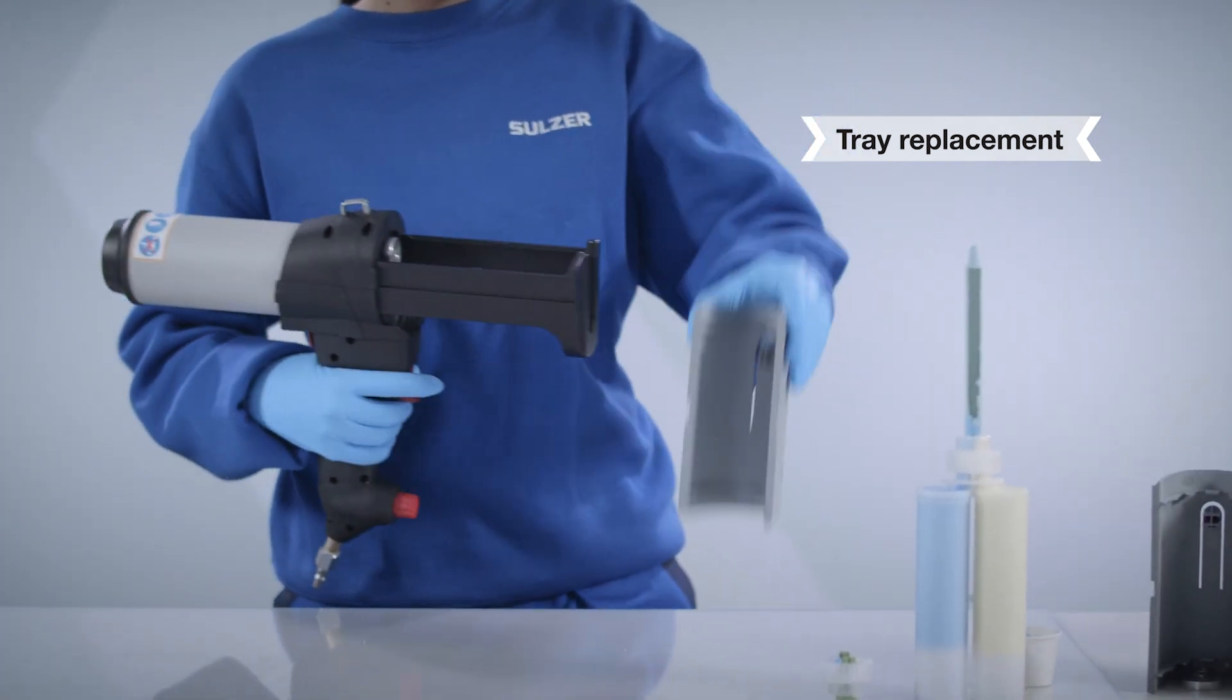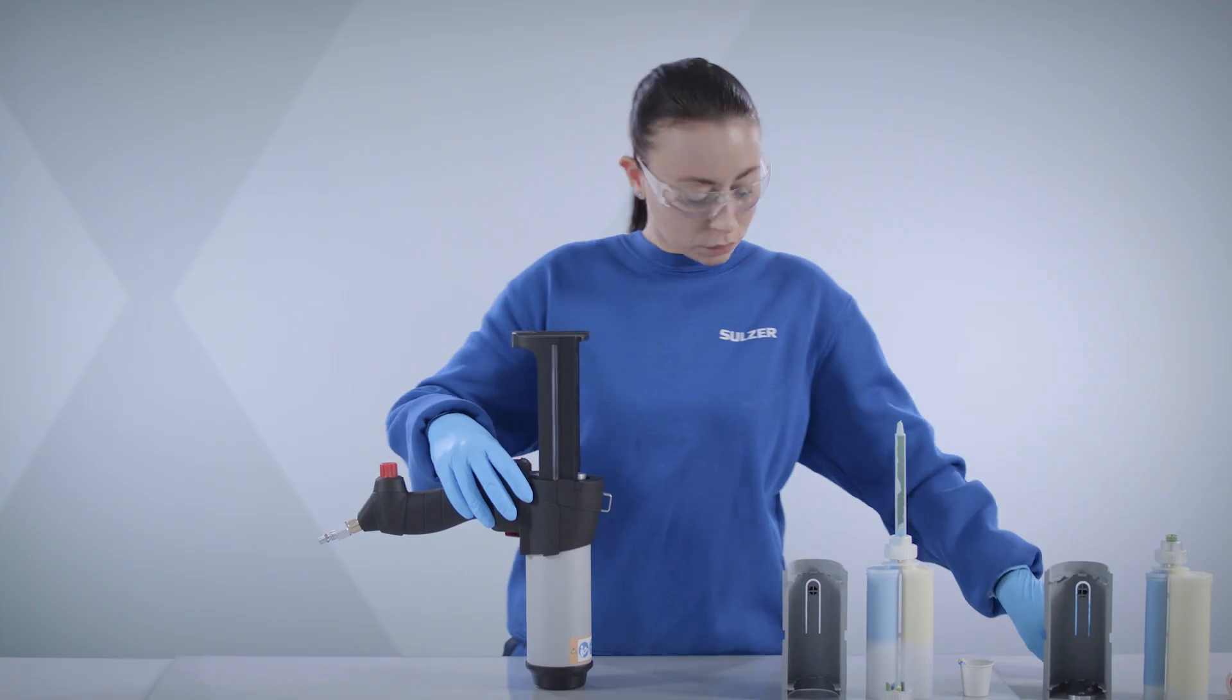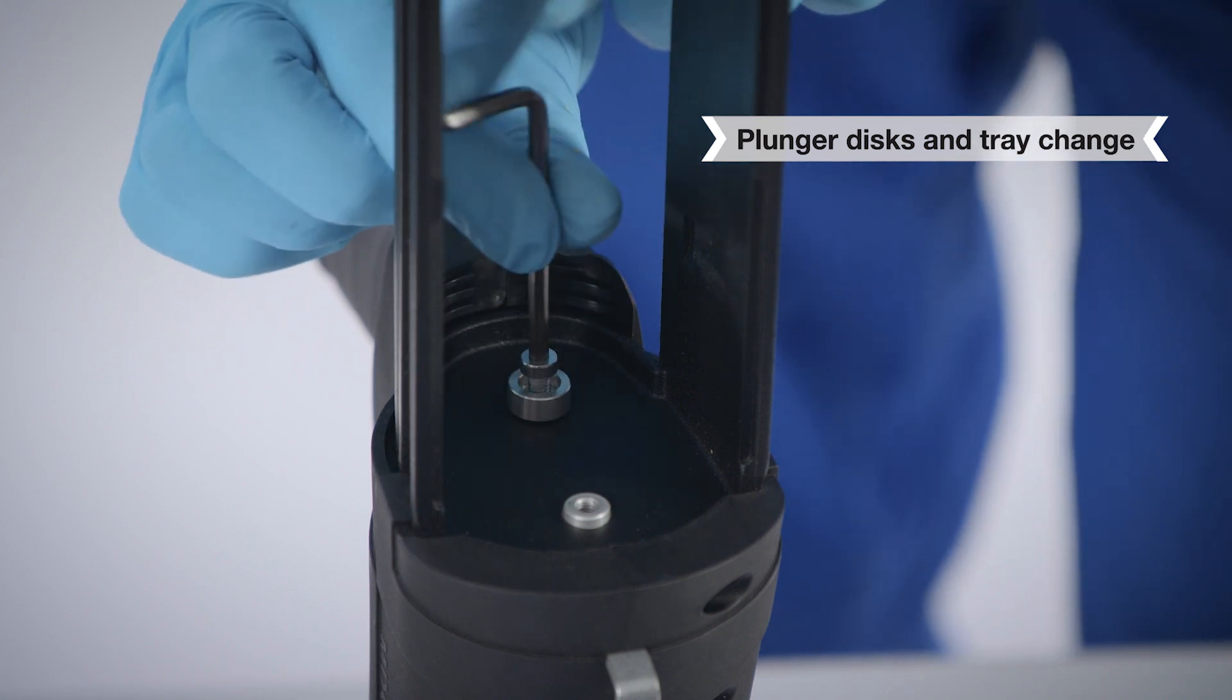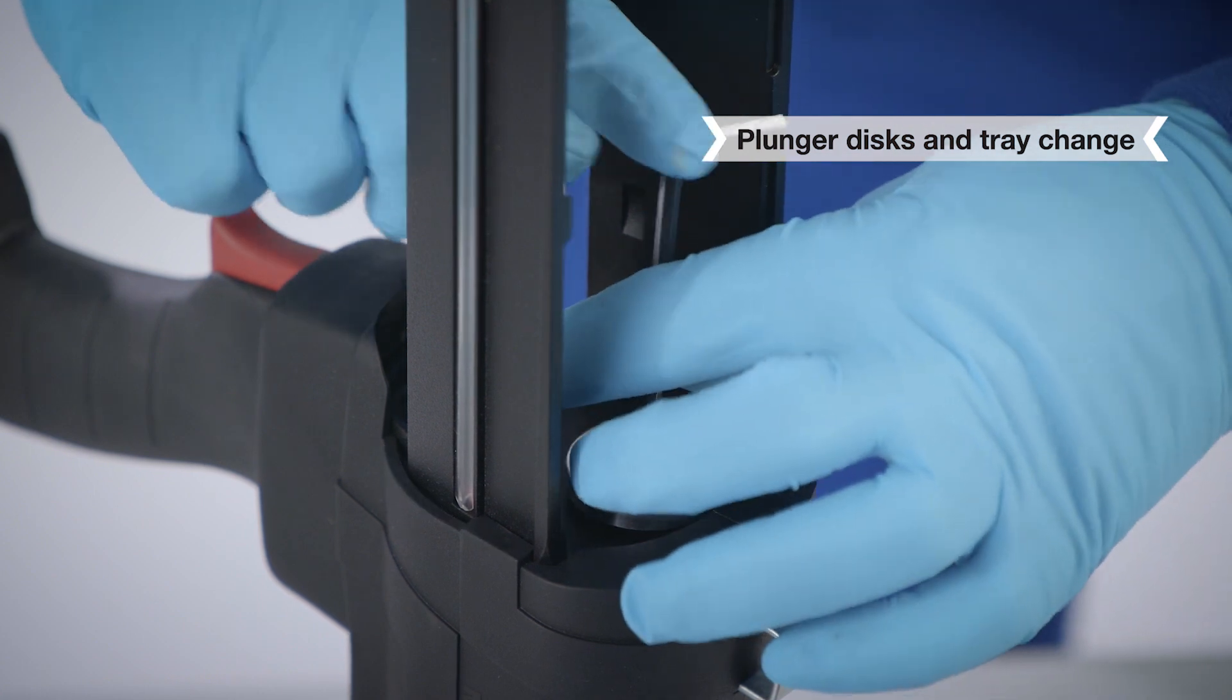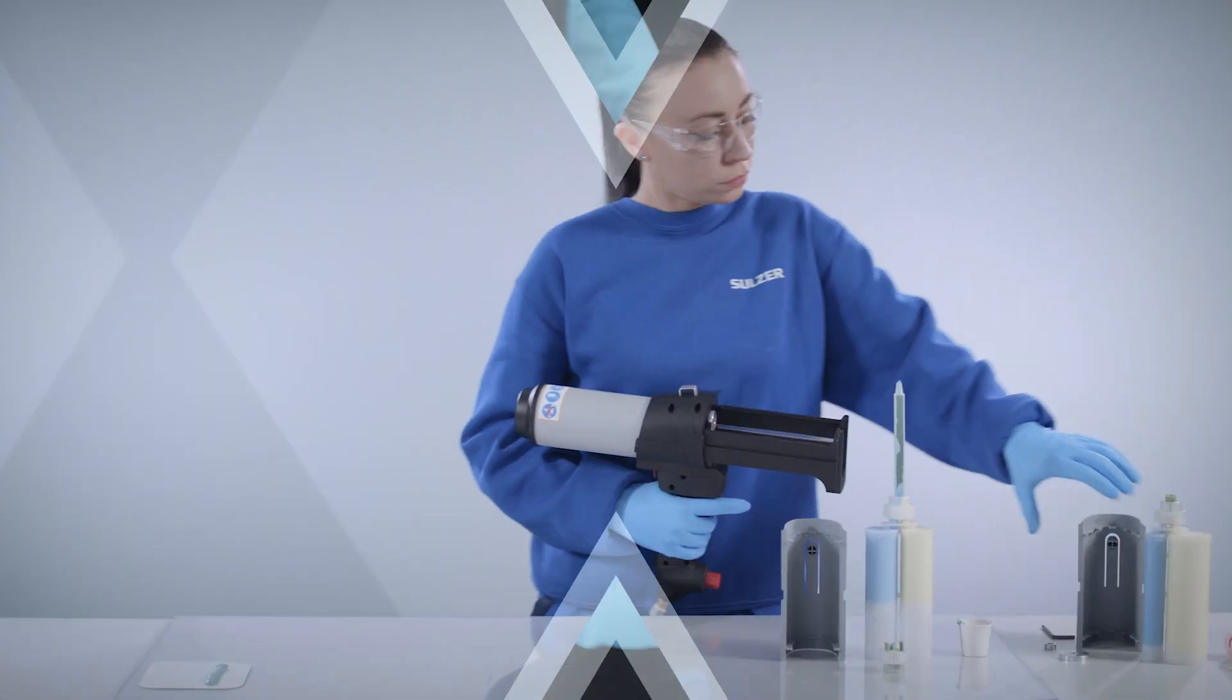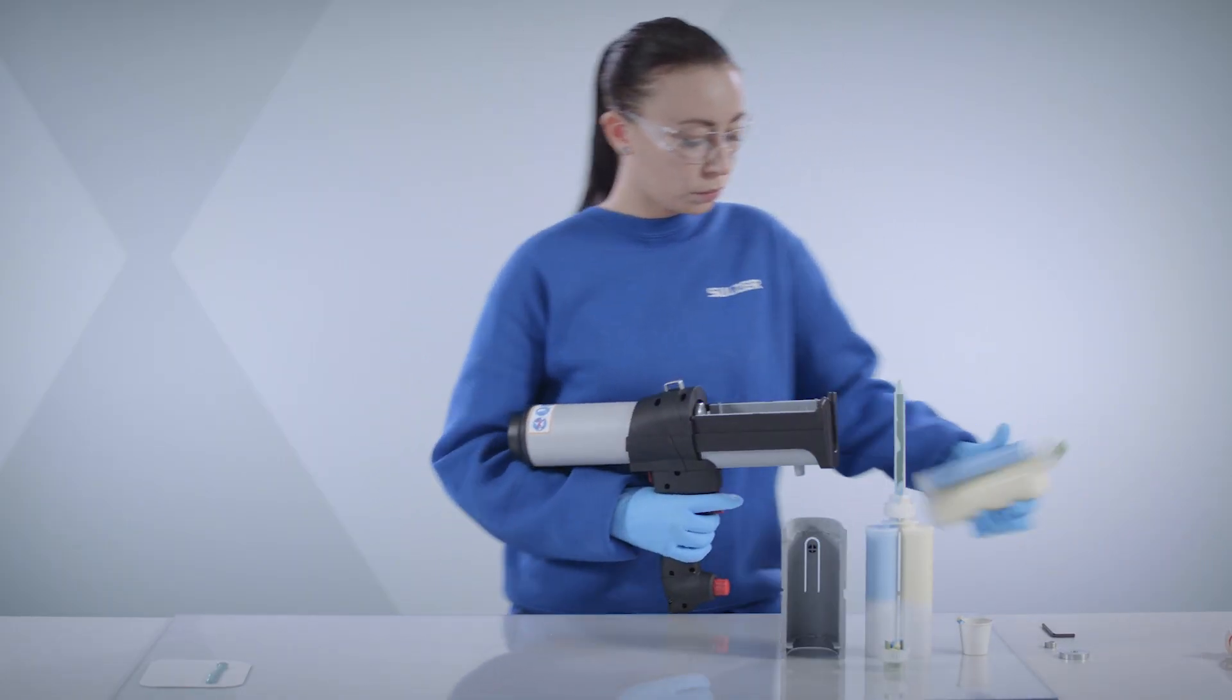To remove the tray, pinch the sides then slide out through the top. Take the correct plunger set. Using a four millimeter allen key, install the smaller B-side plunger disc on the lower rod and the larger A-side plunger disc on the upper rod. Install the new tray until it clicks. The tool is ready for operation.